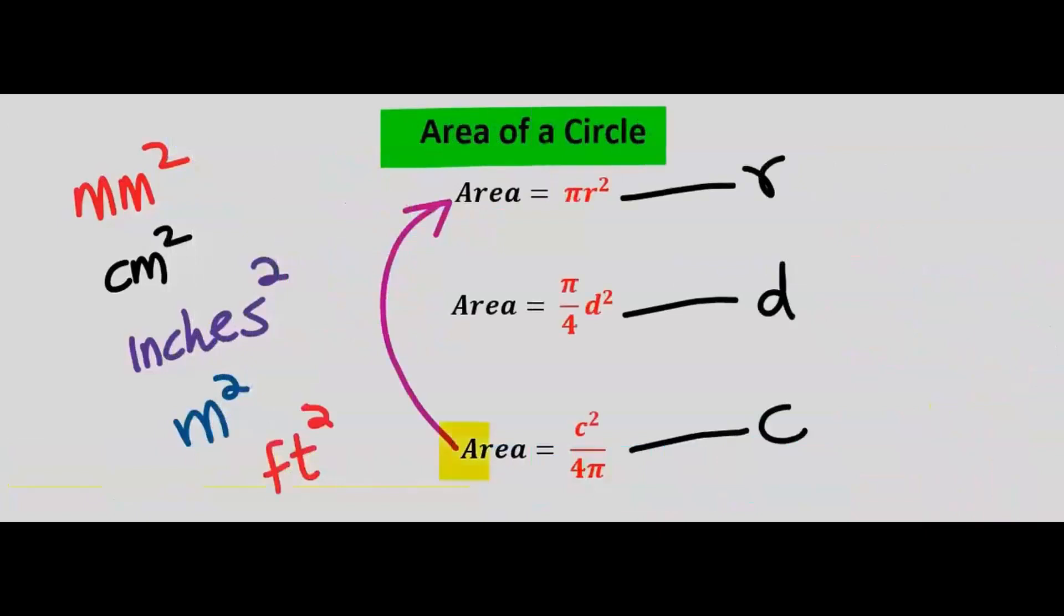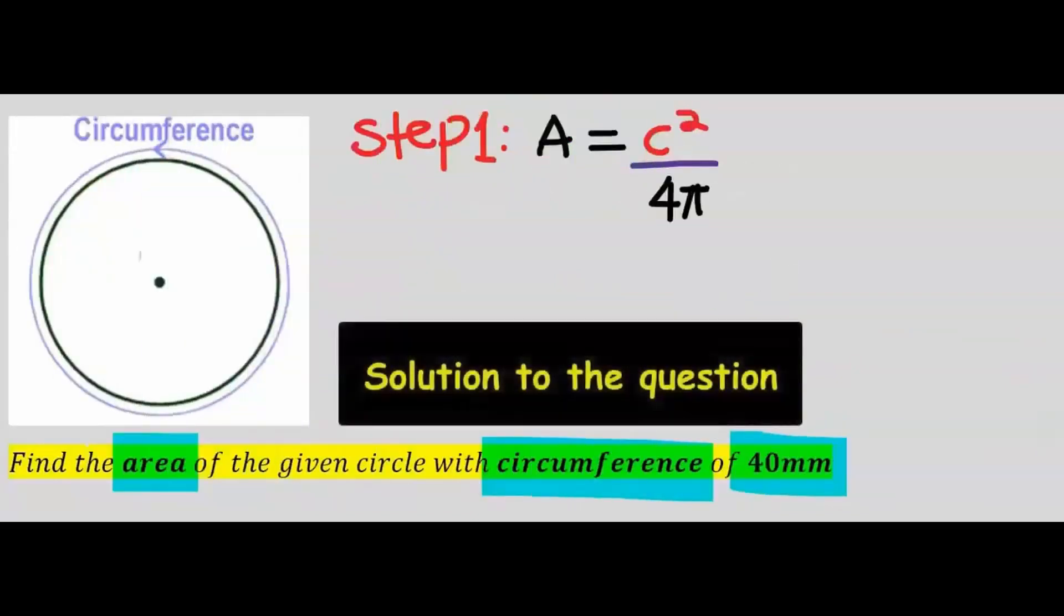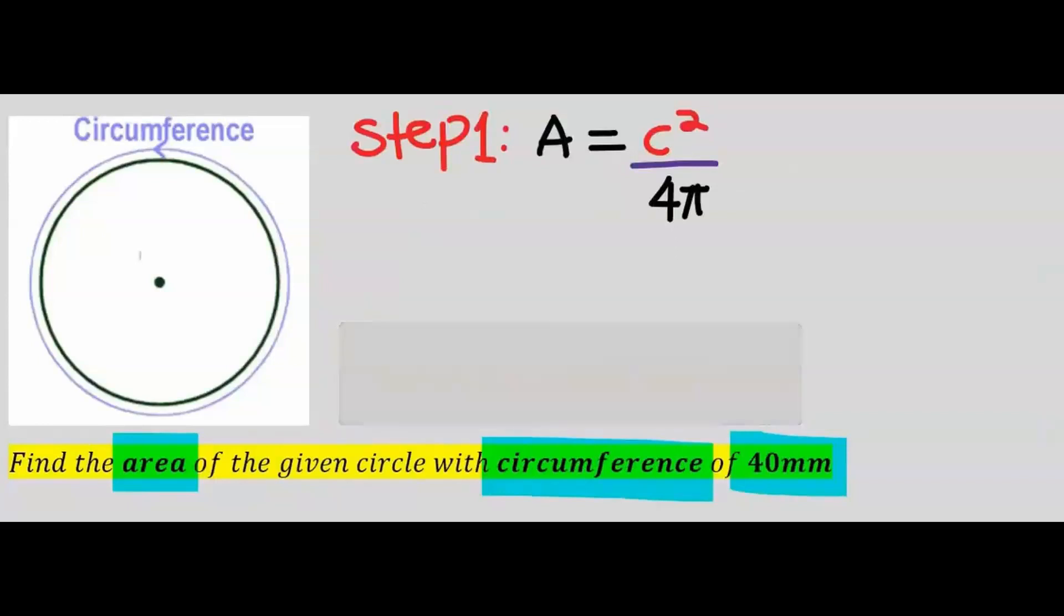Hence, we're going to use this area formula without the radius or the diameter. The first step is to write out the formula for the area of a circle with a given circumference. Next, we're going to substitute.